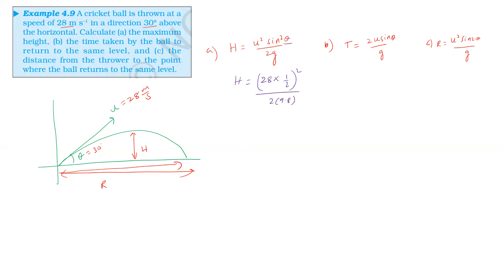2 and 28 give 14. 14 squared is 196, divided by 2 into 9.8, which is 19.6. The twos cancel, giving 10. The maximum height H is 10 meters.